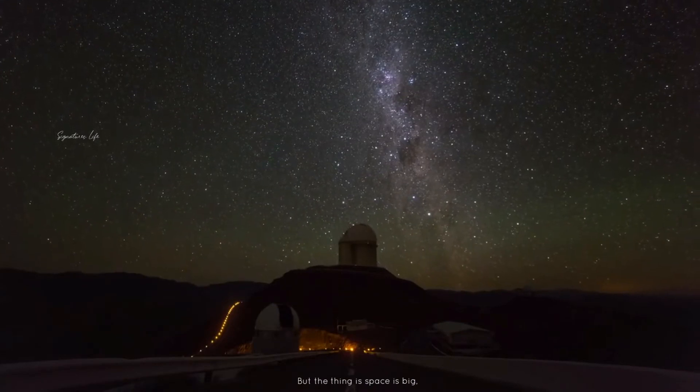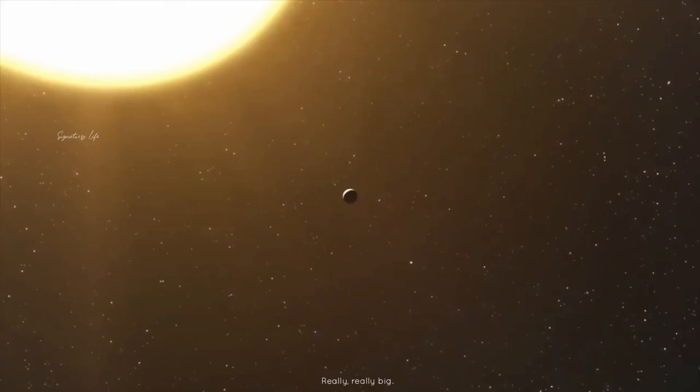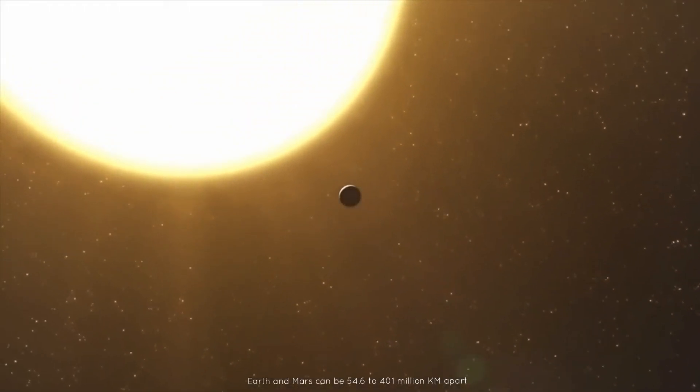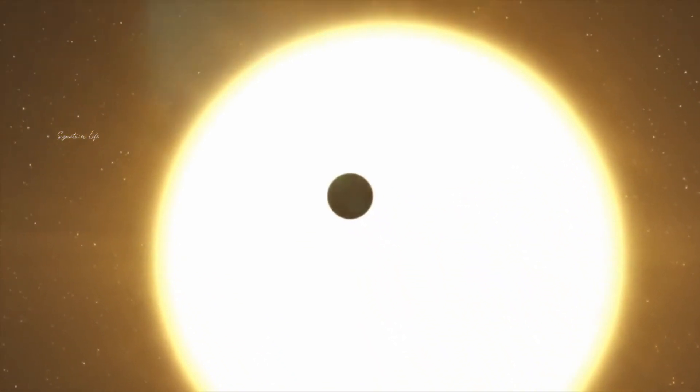But the thing is, space is big. Really, really big. Earth and Mars can be 54.6 to 401 million kilometers apart.